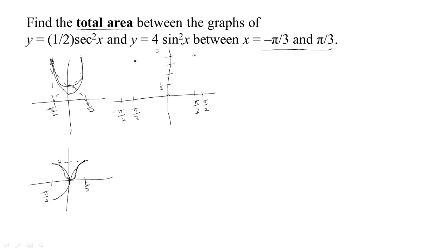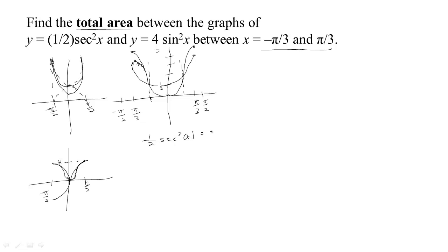Looking at 4sin²x at π/3: the sine of π/3 is √3/2, so squaring gives 3/4, and 4 times 3/4 equals 3. So by π/3 the sine term has outgrown the secant term. The two curves cross somewhere in between, so we need to find where ½sec²x = 4sin²x.